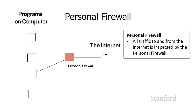Let's say something gets installed on your computer — like you ran a Trojan horse — and now you've got a keylogger. Hopefully, the personal firewall will prevent that keylogger from sending information out to the hacker. It will try to send information on the internet, and hopefully the personal firewall will say you're not allowed to send information off of the computer, I don't know what you're doing, but I'm not going to let you do it.